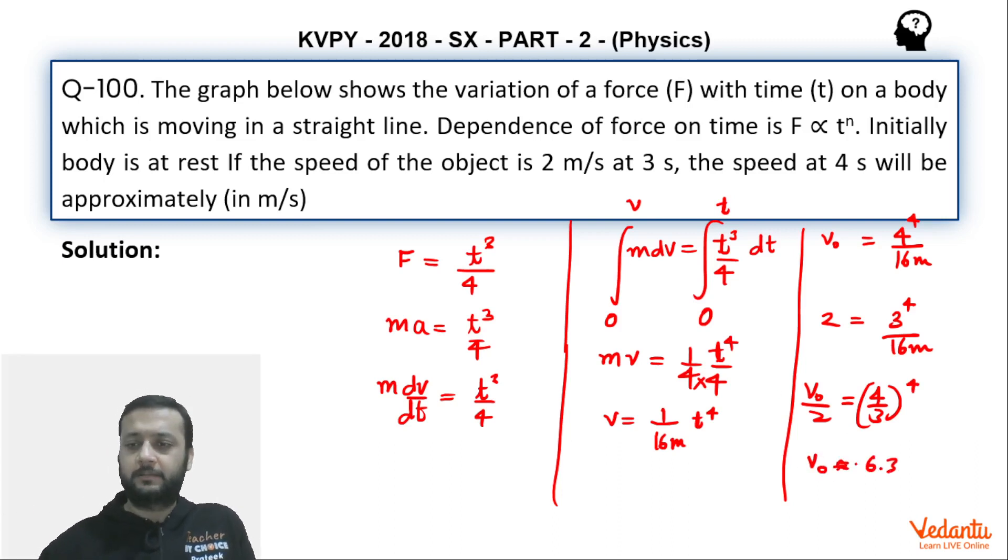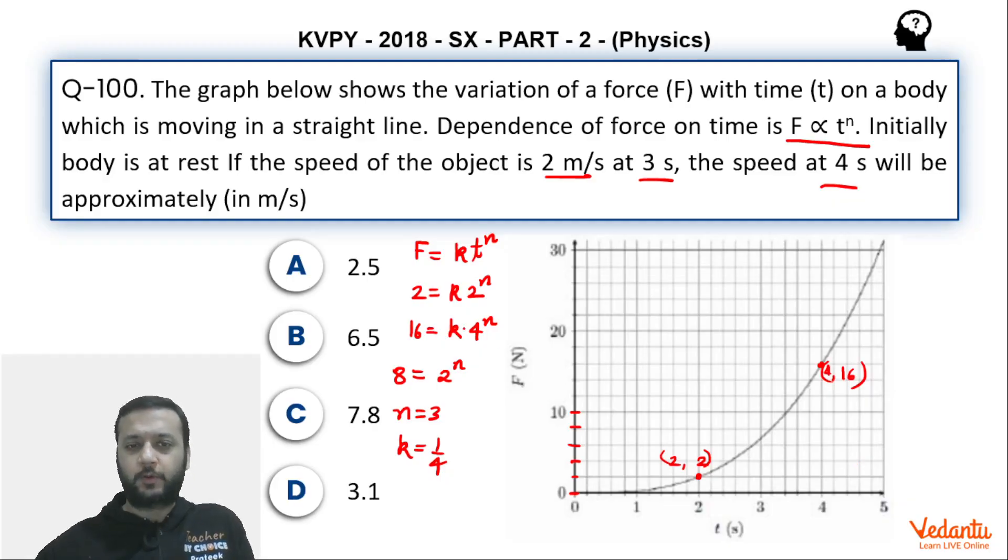So we can say that, what will be the answer? 6.5 will be the closest value. And hence, we will choose option B as the correct answer. I hope you would have understood a fairly simple question, a regular one. That's it. Thank you.